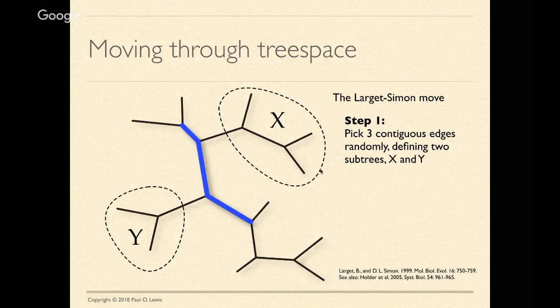One question is how the robot moves through a complicated space like tree space. In the simple two-dimensional example from last time, the robot just picked a spot some distance away in a random compass direction. But tree space is much more complicated. I'll describe a fairly old method described by Largett and Simon in 1999, one of the earliest MCMC proposals for Bayesian phylogenetics.